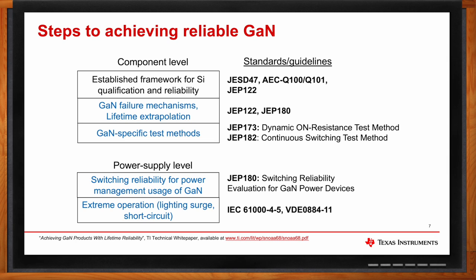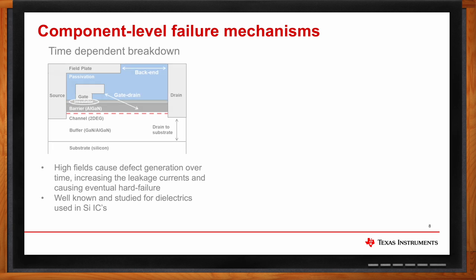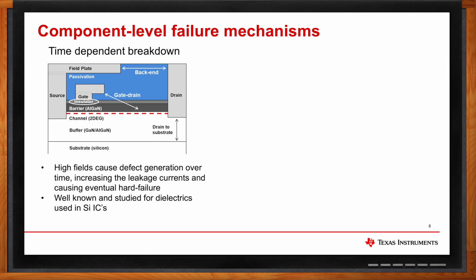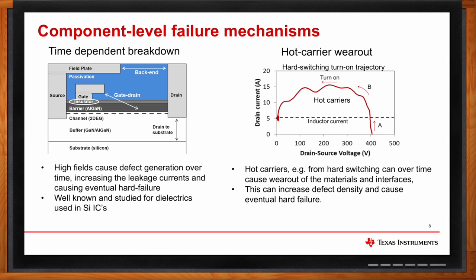What are the failure mechanisms for GaN? There are three key failure mechanisms. The first is time-dependent breakdown, shown in the figure on the left — it occurs due to continuous high fields which cause defect generation over time, increasing the leakage currents and causing eventual hard failure. This is well-known for dielectrics used in silicon ICs and described in JEDEC publication JP-122. The second is hot carrier wearout. The overlap between current and voltage during switching causes hot carriers, which can cause wearout of the materials and interfaces over time, increasing defect density and causing eventual hard failure.